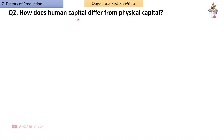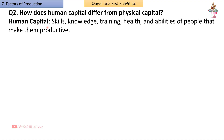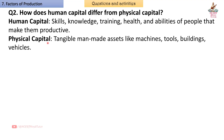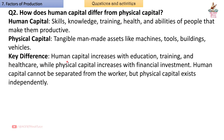Question 2: How does human capital differ from physical capital? Answer: Human capital refers to the skills, knowledge, training, health, and abilities of people that make them productive. Physical capital refers to tangible man-made assets like machines, tools, buildings, and vehicles. Key difference: Human capital increases with education, training, and healthcare, while physical capital increases with financial investment. Human capital cannot be separated from the worker, but physical capital exists independently.